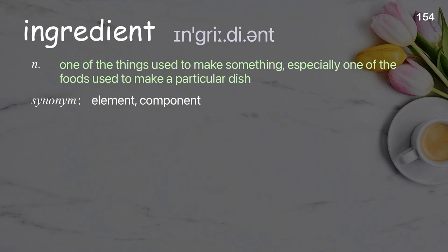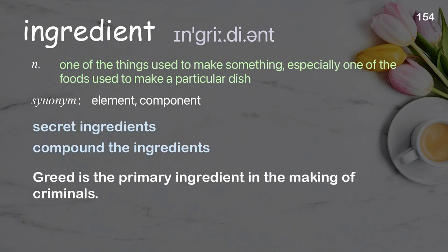Ingredient: one of the things used to make something, especially one of the foods used to make a particular dish. Examples: secret ingredients, compound the ingredients. Greed is the primary ingredient in the making of criminals.